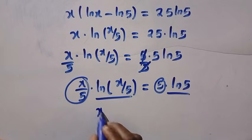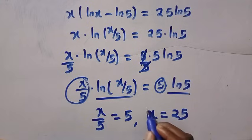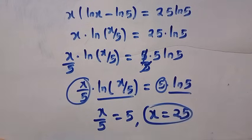So the first one is x over 5 equals 5. So therefore our x equals 25.